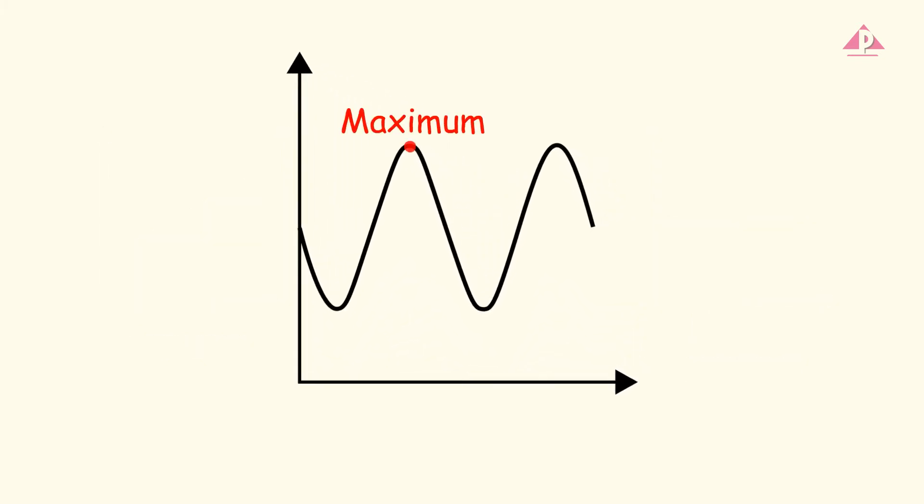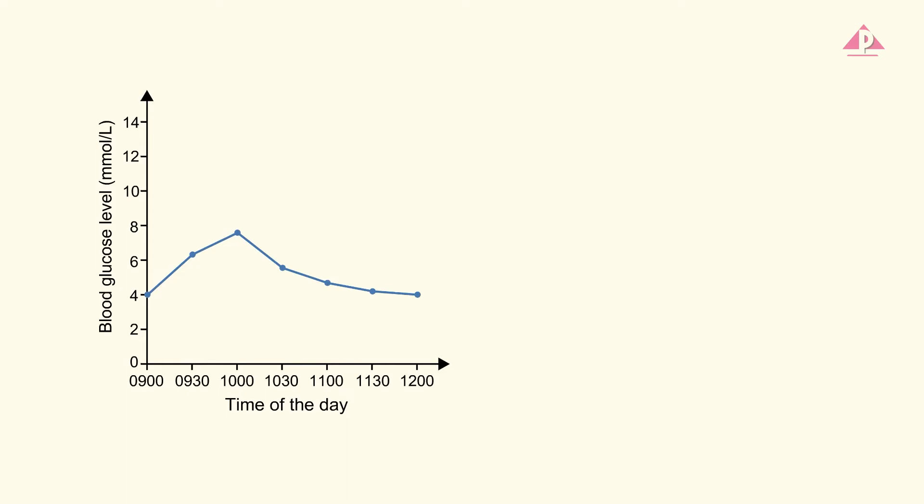Point out any maximum or minimum. They usually occur when the trend changes. Let's take a look at this graph. Alan is a healthy person. This graph shows the changes in his blood glucose level after he had fasted for 12 hours and then drank a glucose solution.